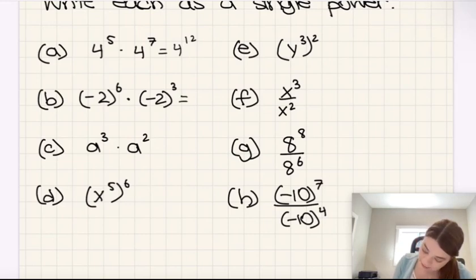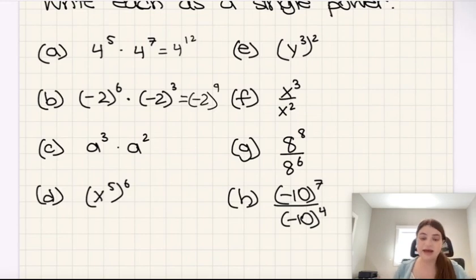Over here we have negative 2 to the power of 9, because again, we have two powers of the same base, so we just add up our exponents, and same thing here. a cubed times a squared is a to the power of 5, since we just add up 3 and 2.